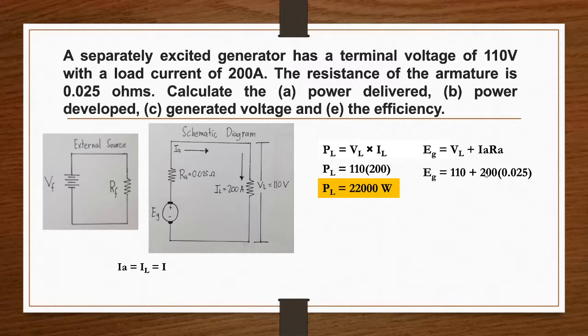110 plus 200 times 0.025. Our generated voltage is 115 volts.